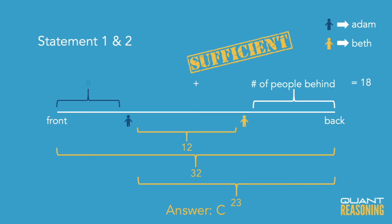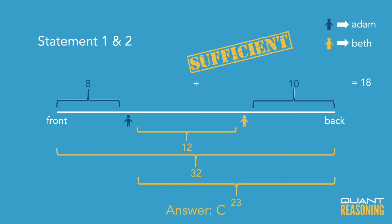Just for our purposes, using our visualization: if there are 32 people in line and Adam can see 23 behind him, that means he is ninth in line because 9 plus 23 is 32. If Adam is ninth in line, there are eight people ahead of him. We know that there are a total of 18 people ahead of Adam and behind Beth. So if eight of those 18 are ahead of Adam, that means 10 are behind Beth. The answer to the question is 10 people behind Beth — but more importantly, the answer is C.